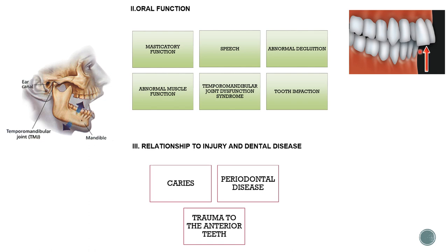Our anterior teeth help in biting and posterior teeth — molars — help in chewing. If a person has front teeth that are more forwardly placed, they cannot bite or chew properly, causing a masticatory function problem. Teeth are also important in speech — any problem in tooth positioning will hamper speech. Regarding abnormal deglutition, if you cannot chew food properly because of malocclusion, the bolus cannot form correctly, affecting the swallowing process.